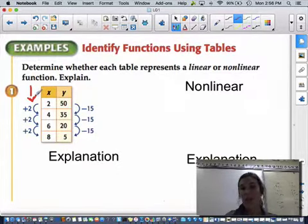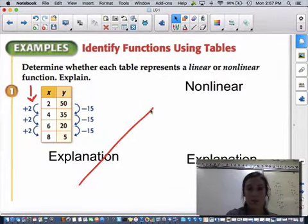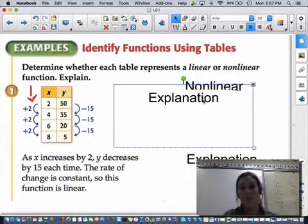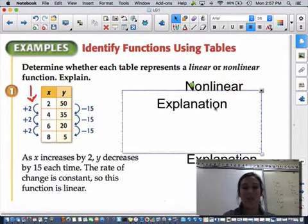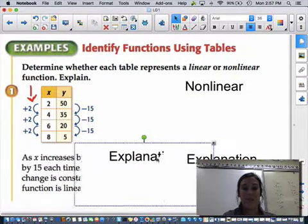Now on the y side, if it is linear, it will always also be constant. So from 50 to 35, it's going down 15. From 35 to 20, it's going down 15. From 20 to 15, it is going down 15. So therefore, as x increases by 2, y decreases by 15 each time, the rate of change is constant. So this is a linear function. Since that rate of change is constant, it is a linear function.